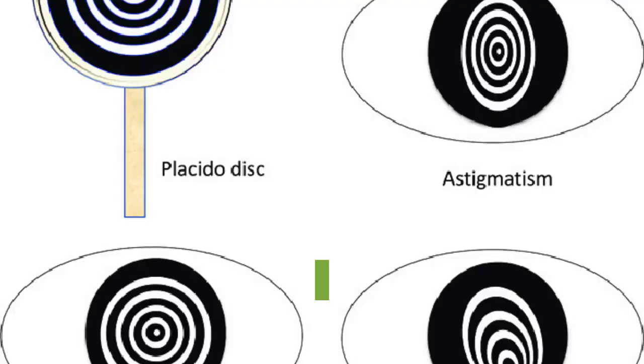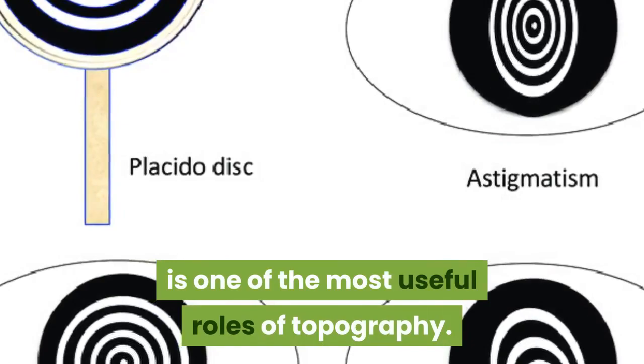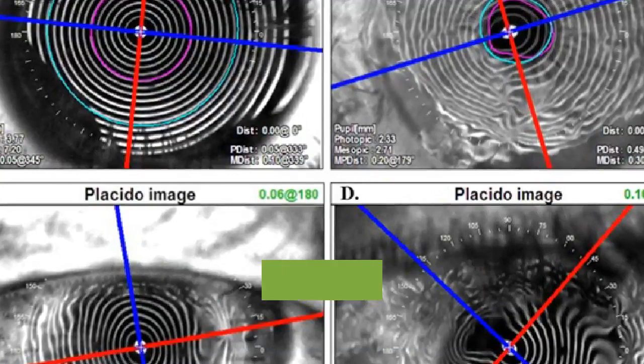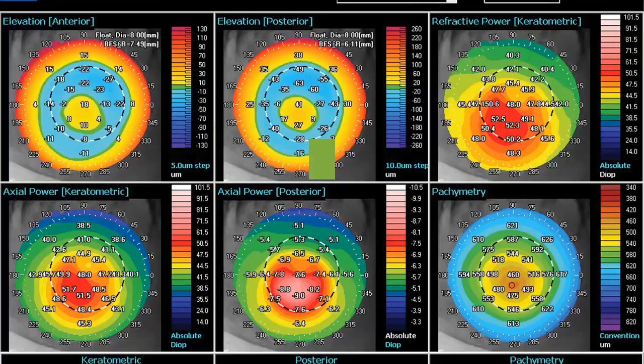In keratoconus, early screening of keratoconus suspects is one of the most useful roles of topography. Early keratoconus in suspects looks normal on slit lamp examination, and central keratometry gives only a limited assessment. Therefore, topography has become the gold standard in screening keratoconus suspects.